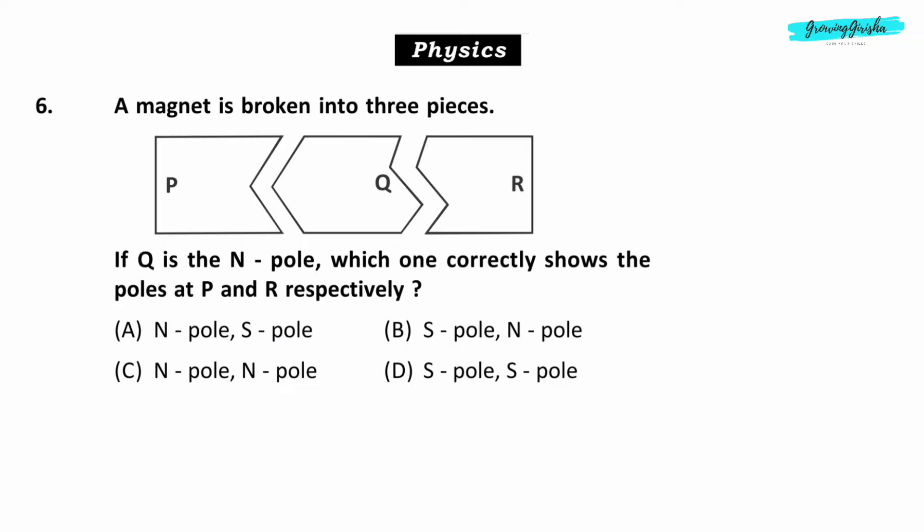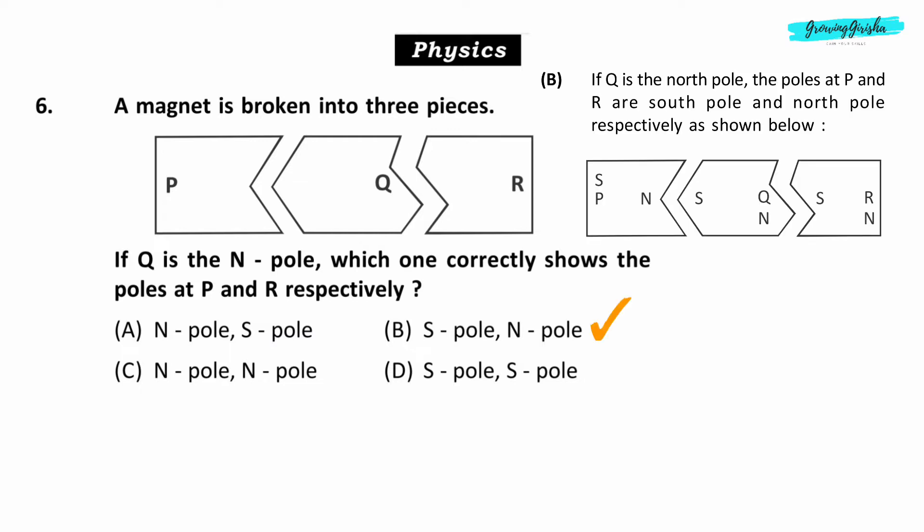Physics. Question 6. A magnet is broken into three pieces. If Q is the north pole, which one correctly shows the poles at P and R respectively? Option B.